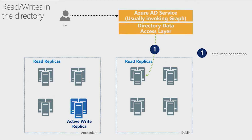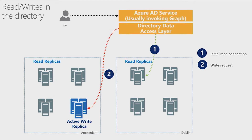The user is reading and requesting information from the directory, and then all of a sudden they make a write — for example, they change their password or update the membership of a group they own to add one more user to their team. This write request, unbeknownst to them, will not go to the Dublin replica they're talking to. It will go to the active write replica in Amsterdam, and it will apply the change there, performing all the authorization checks to verify the user is privileged to make that write.